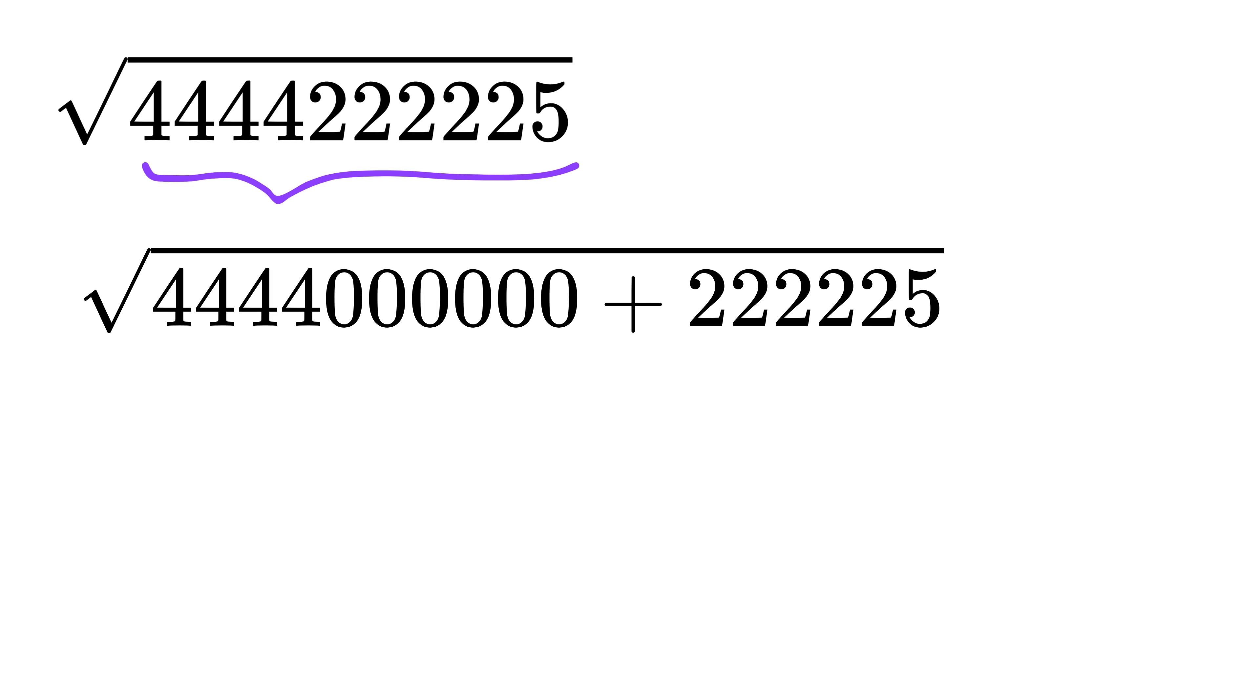Can you observe what we did? The first part has all the same number of fours from the original number, and we just added the same number of zeros in place of twos and the last five.